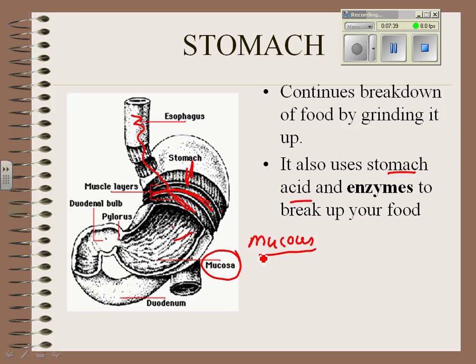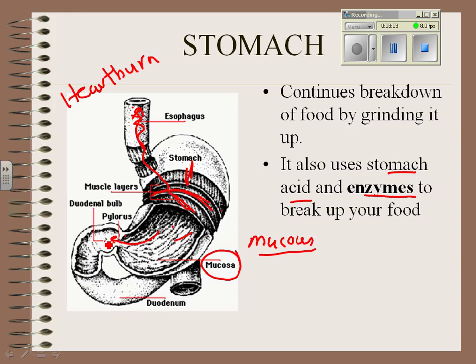But if you burp that acid up into your esophagus — I do that a lot when I eat Kentucky Fried Chicken — that causes a condition called heartburn. There are also other enzymes in your stomach that help break up your food. As food finishes in your stomach, it's moved out through a little valve into the small intestine.